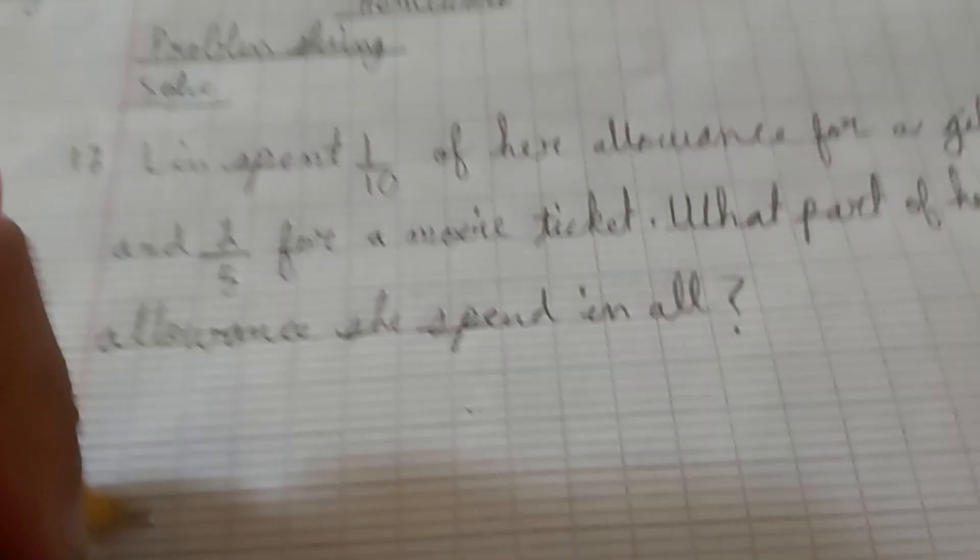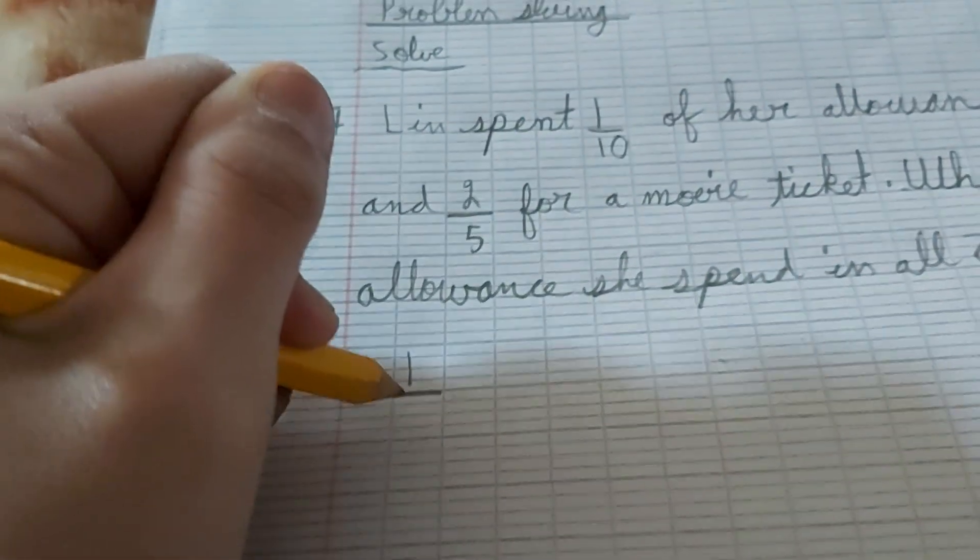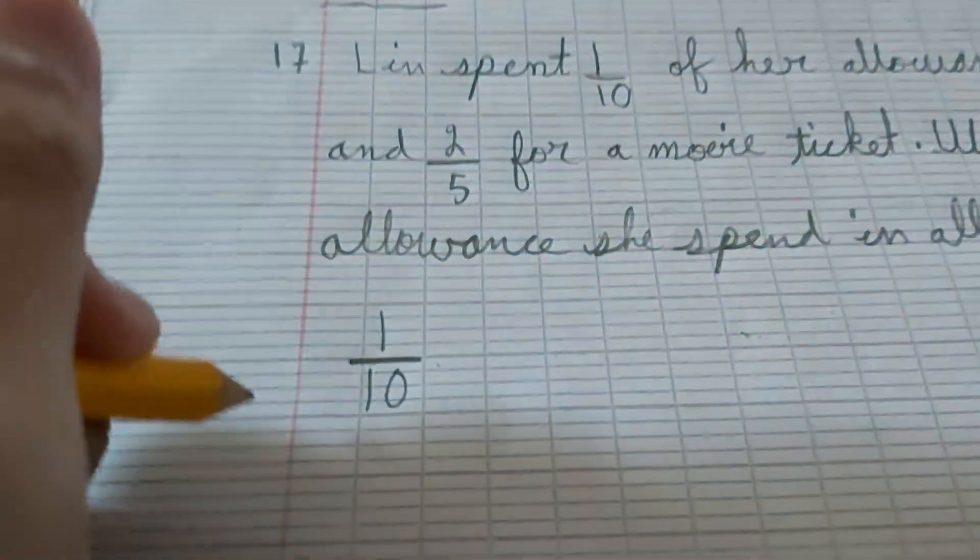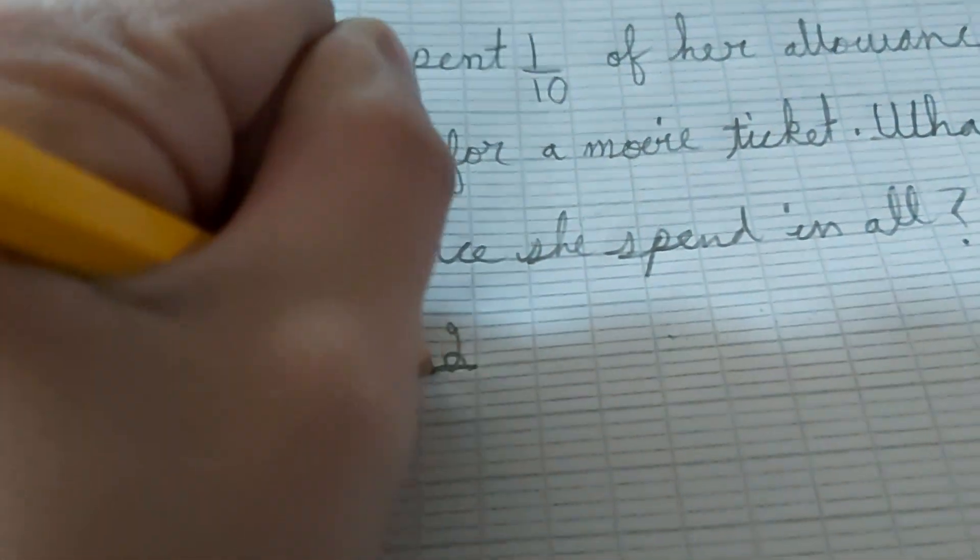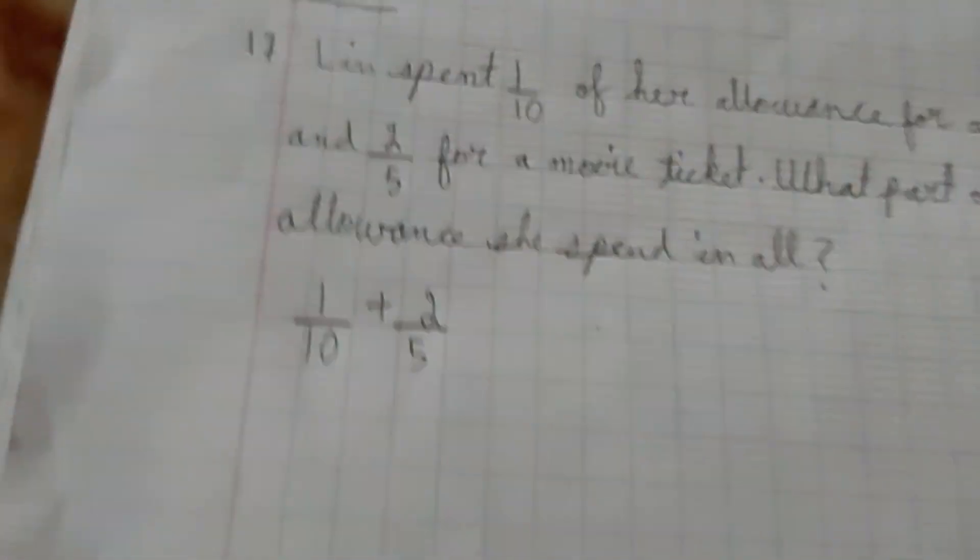Now, you'll put your first number, 1 over 10, and you put plus here, 2 over 5. This is your second number.